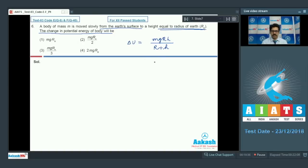Delta U is equal to mgRh upon R plus h, if h is the height through which body is raised from the surface of earth.